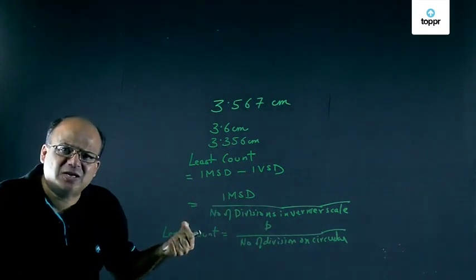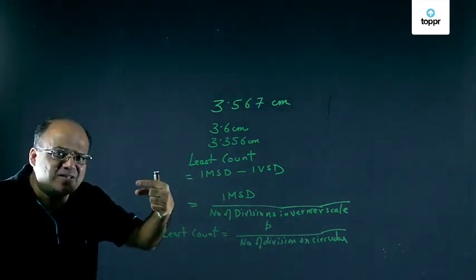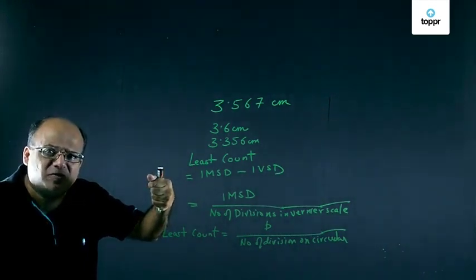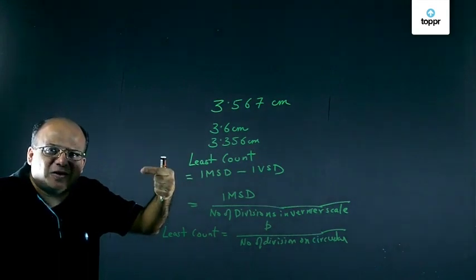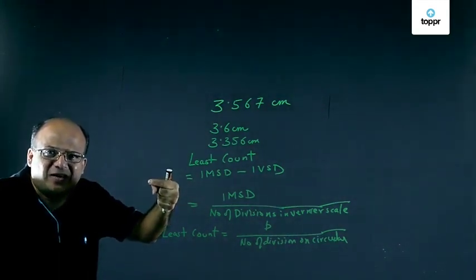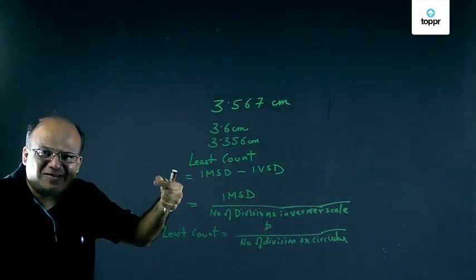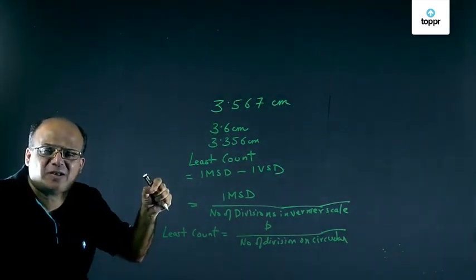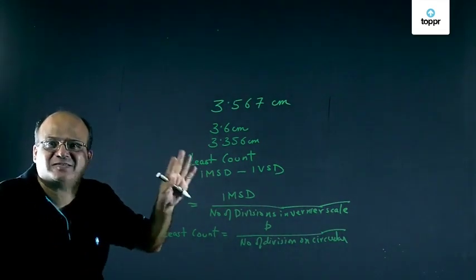Now screw gauge can also have an error called backlash error. Backlash error means when we are moving the screw in one direction and then we change the direction of rotation, the rotation does not reverse immediately. For some time, the reading remains at the same level. Because of this, we get some error. So how to avoid this backlash error? Keep moving the screw in the same direction always till the reading is done.